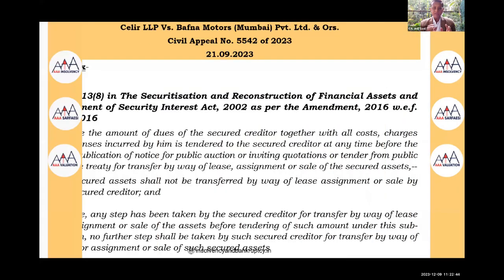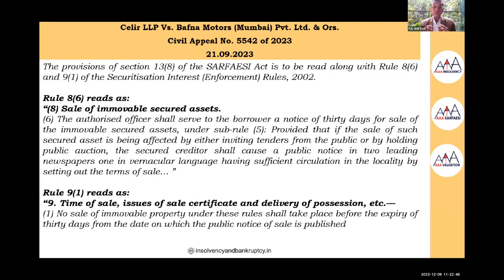Rule 8, Sub-rule 6 of the Securitization and Reconstruction of Financial Assets and Enforcement of Security Interest Rules 2002 says: the authorized officer shall serve the borrower a 30-day notice for sale of the immovable secured asset. Where the sale is being effected by inviting tenders or public auction, the secured creditor shall cause a public notice in two leading newspapers — one in a vernacular language having sufficient circulation in the locality — setting out the terms of sale.